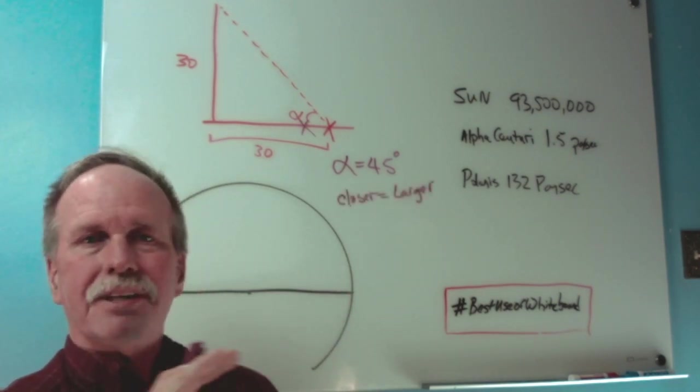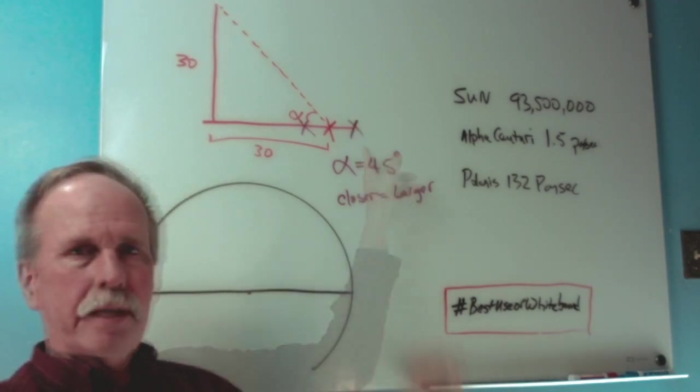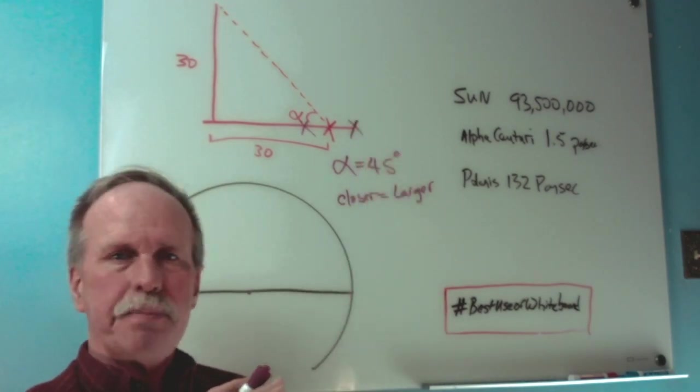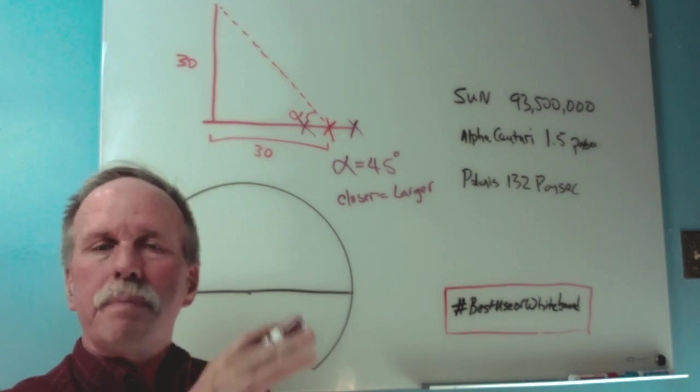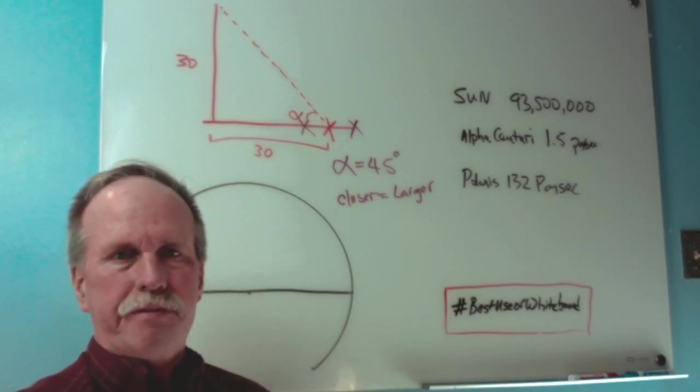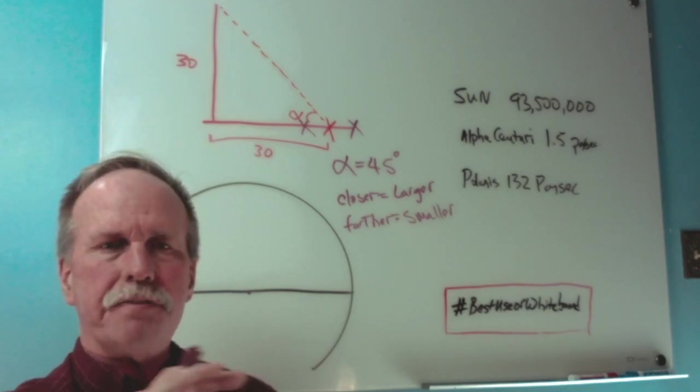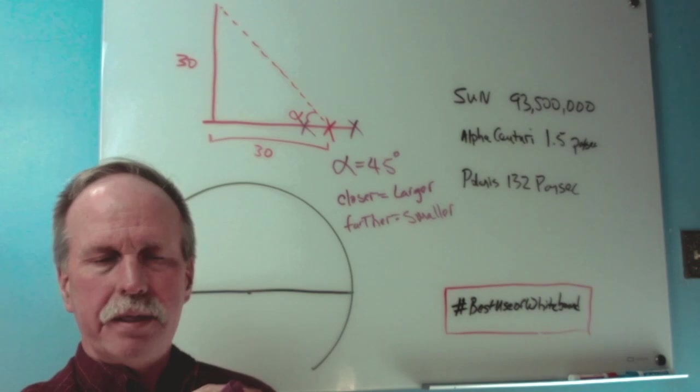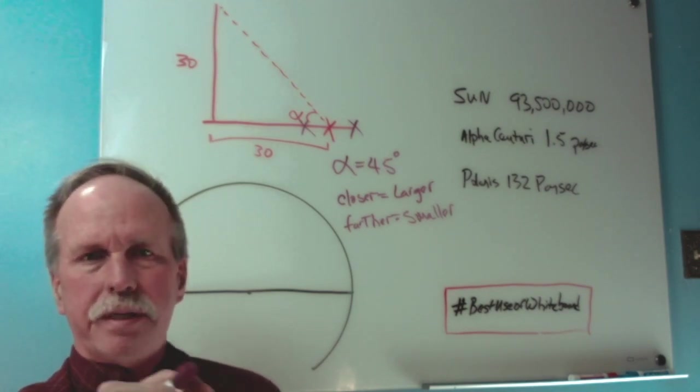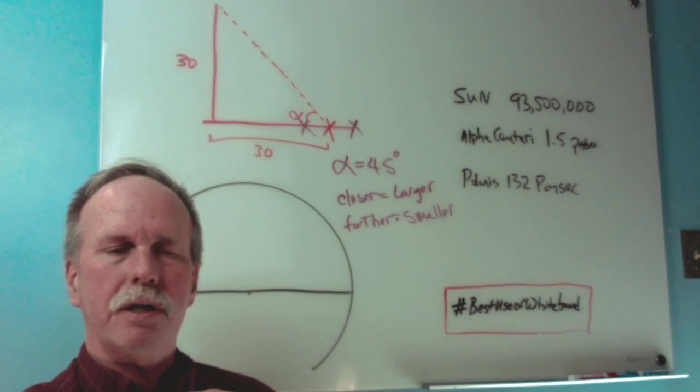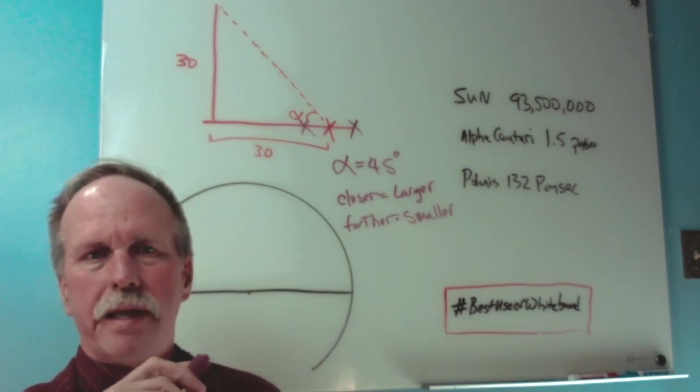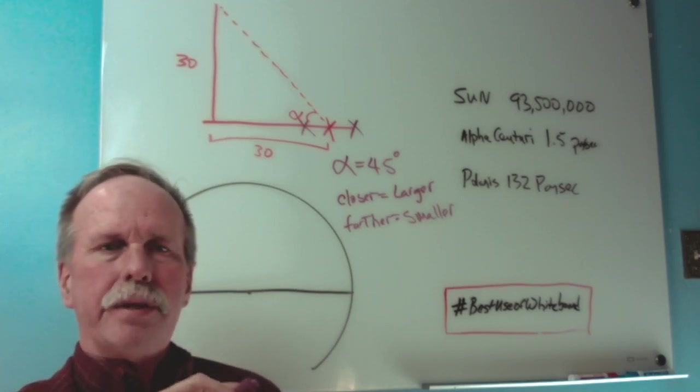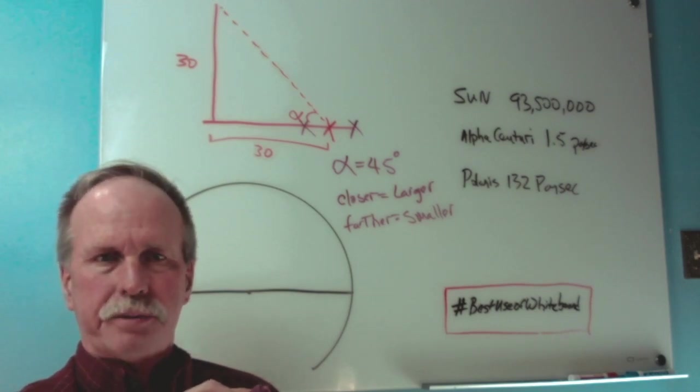What if instead of being at this red X, we are instead here, a little bit closer to the flagpole? Would the angle formed from this spot to the top of the flagpole be larger or smaller than 45 degrees? So closer equals a larger angle. What if we're further away? The angle to the top of the flagpole would be smaller than 45 degrees. Now while this seems to be rather obvious, it's very important when it comes to doing celestial navigation. And the reason that it's important is that there is something in celestial navigation called circles of equal altitude. And we use circles of equal altitude to find our position on Earth.